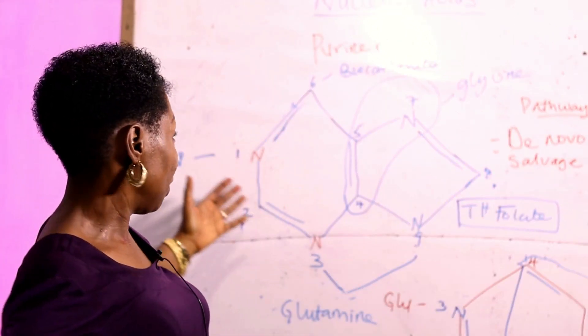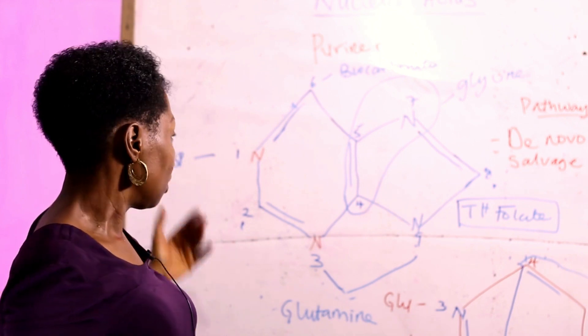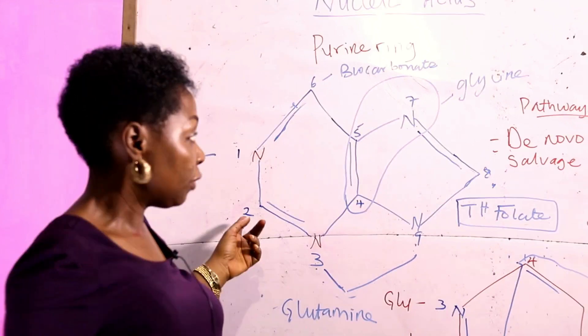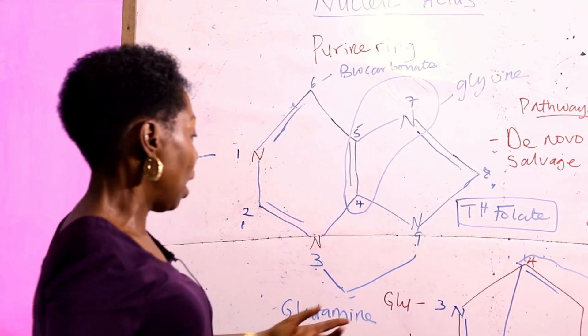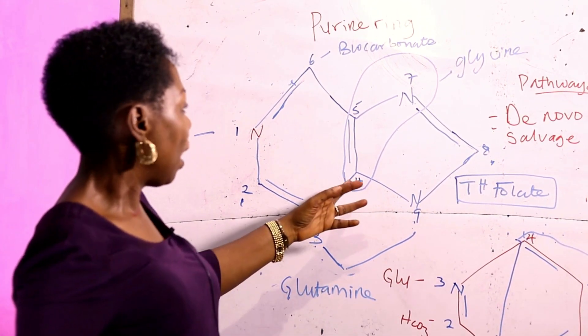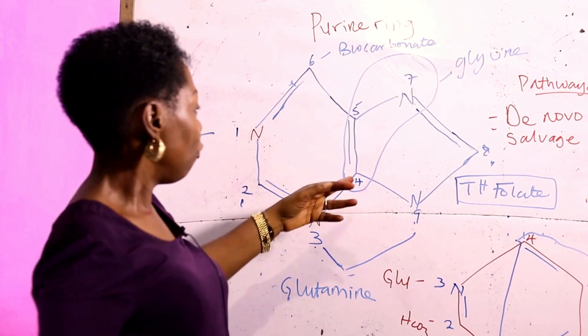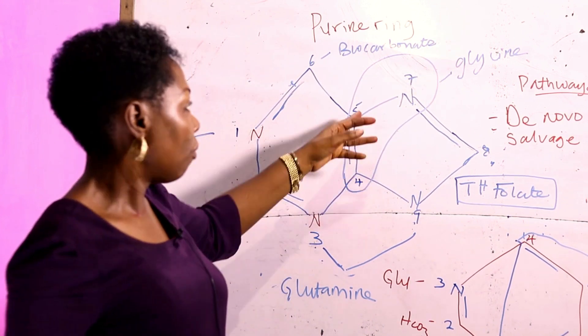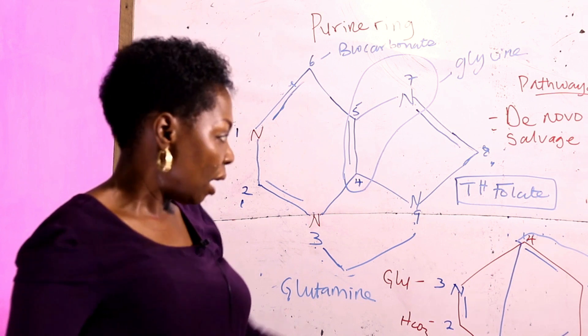We're going to start from the purine ring. You have aspartate. You have tetrahydrofolate for carbon 2 and 8. You have glutamine for positions 3 and 9. And then you have glycine for position 4, 5, and 7.